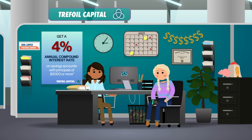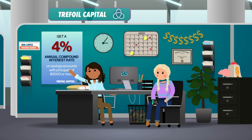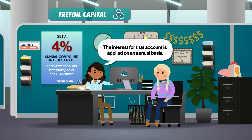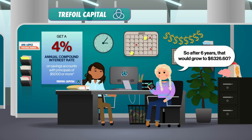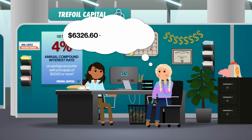Alda checks out the offerings at Trefoil Capital, her local bank. They offer a very generous 4% annual compound interest rate for a principal around $5,000 like hers. According to their terms and conditions, the interest is applied on an annual basis — so the balance in her account stays exactly the same all year round, except once a year when she gets an extra 4% added to whatever her current balance is. Using the compound interest formula from last episode, she finds that her bank balance six years from now will be $6,326.60, meaning she would earn roughly $1,327.